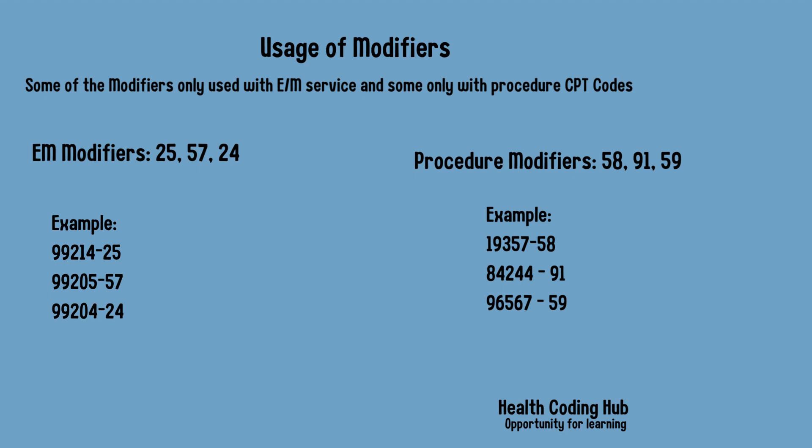Modifiers are divided into two categories. First, E&M modifiers — such as modifier 25, modifier 57, and modifier 24 — can be used only with E&M codes, like outpatient, inpatient, observation, and critical care E&M codes. These cannot be used with procedure CPT codes. Similarly, procedure modifiers can be used only with procedures such as lab testing, minor or major surgeries, and radiological examinations.